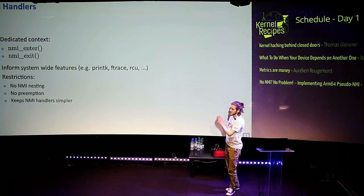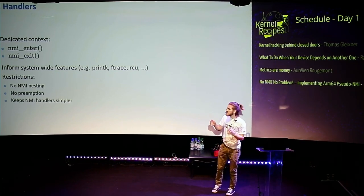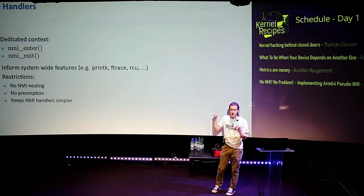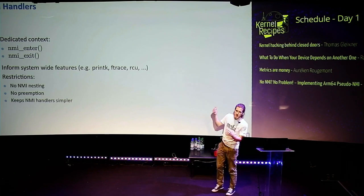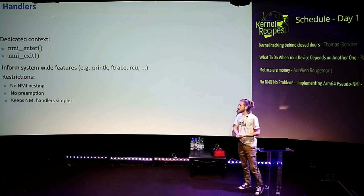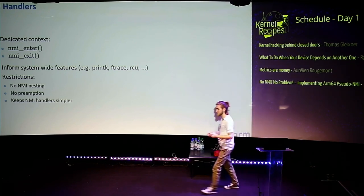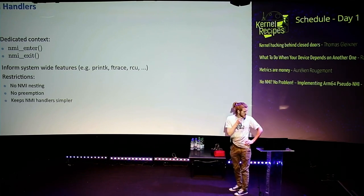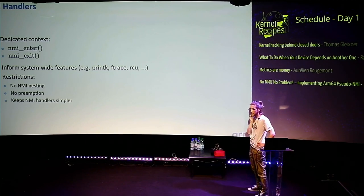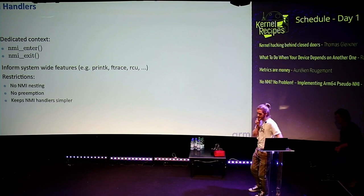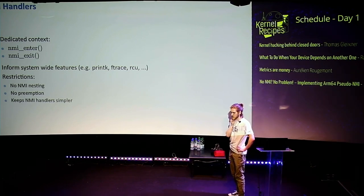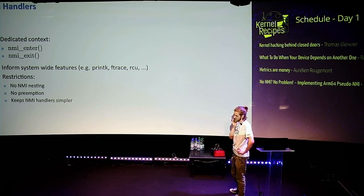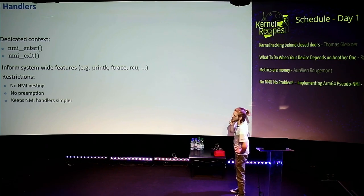Because of this, NMI enter is the first thing that you should call before entering C code, or at least traceable C code — otherwise you might try to call ftrace incorrectly. Ftrace runs perfectly fine in NMI mode; what it does is change the context so it knows the context, similar to printk — it's just another context so it knows it could reenter itself. But yes, it works perfectly fine in NMI mode.